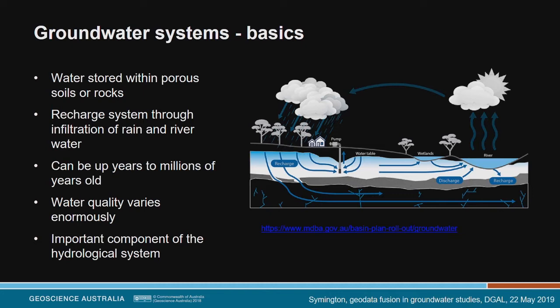Once it's in the system, water can go into what we call aquifers — geological units where water flows quite readily. Within these systems there are also aquitards, which are rock units where water flows relatively slowly or not at all. I'm going to use this terminology a bit throughout.